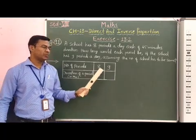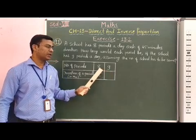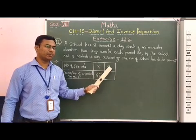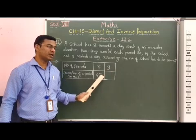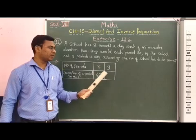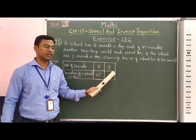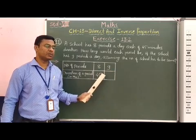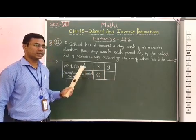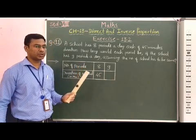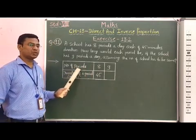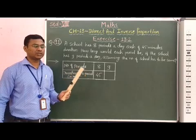Now students, we observe here: if the number of periods increases, then the time of 1 period decreases. Therefore, it is an example of inverse proportion. In this case, between these two quantities, there is inverse proportion.